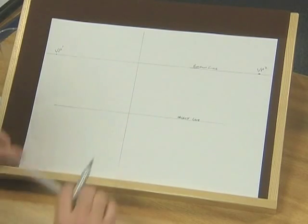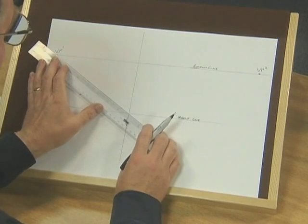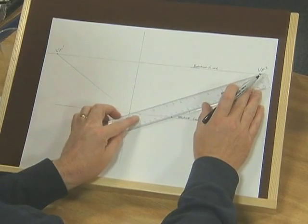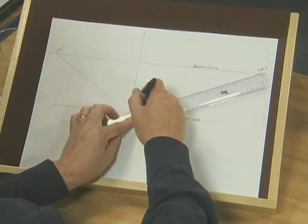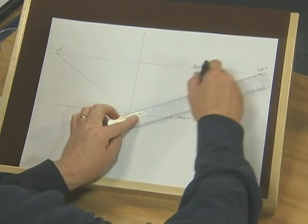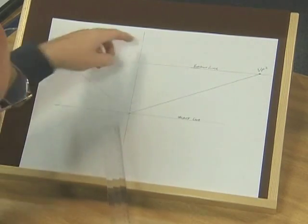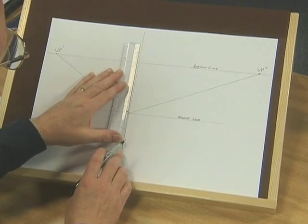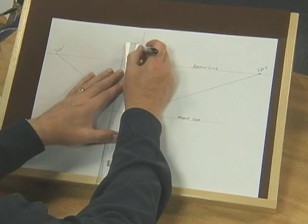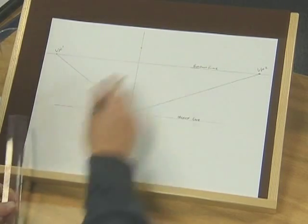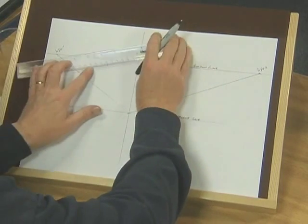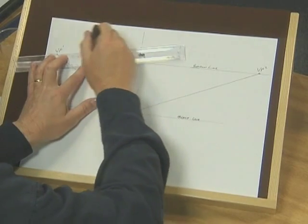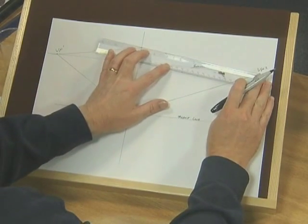But it's exactly the same process as before. I can join my front point to the vanishing point on both sides. I now need to determine the height of the object, so I'm going to make mine 130mm, the dimension that's given in the workbook, and you'll see that this dimension takes this above the horizon line. I'm going to join those up to the vanishing points, this side and this side.